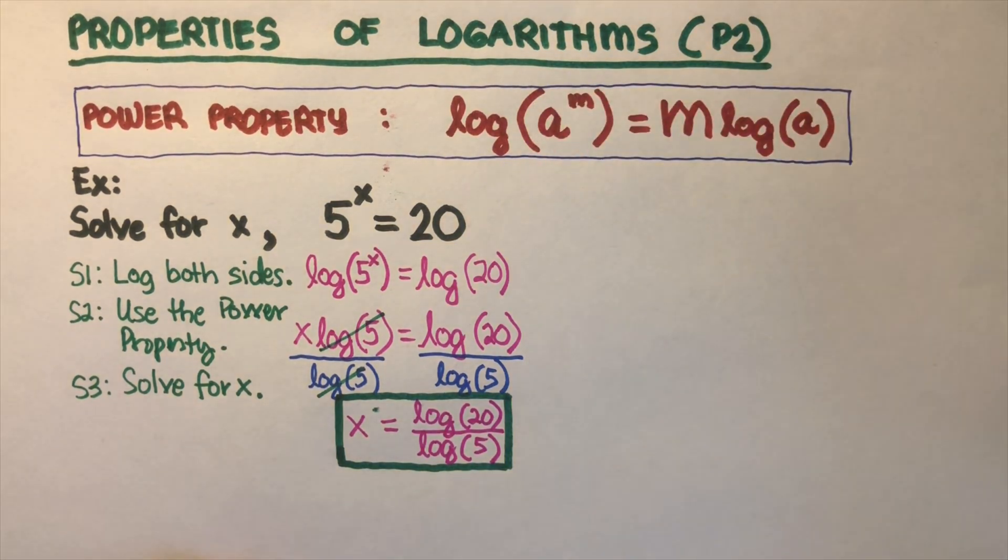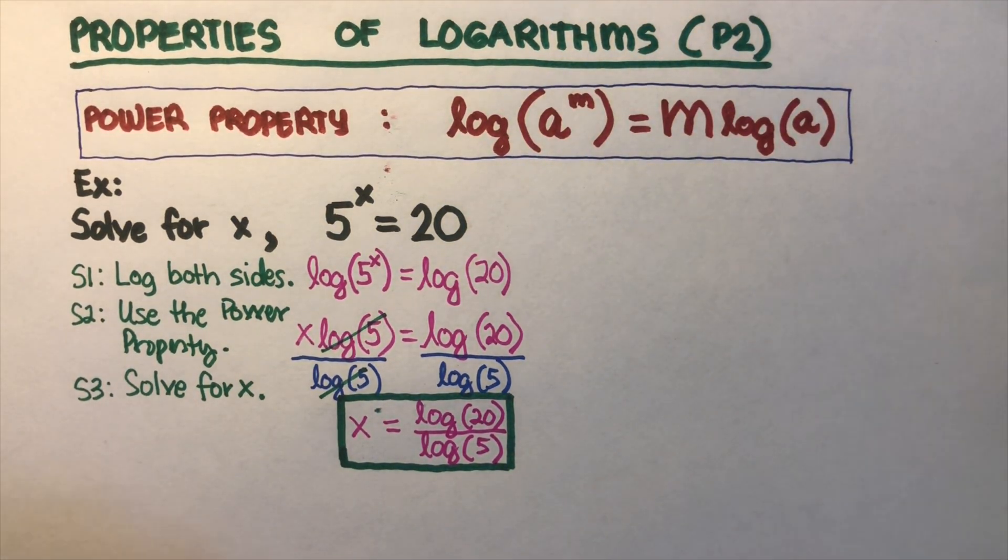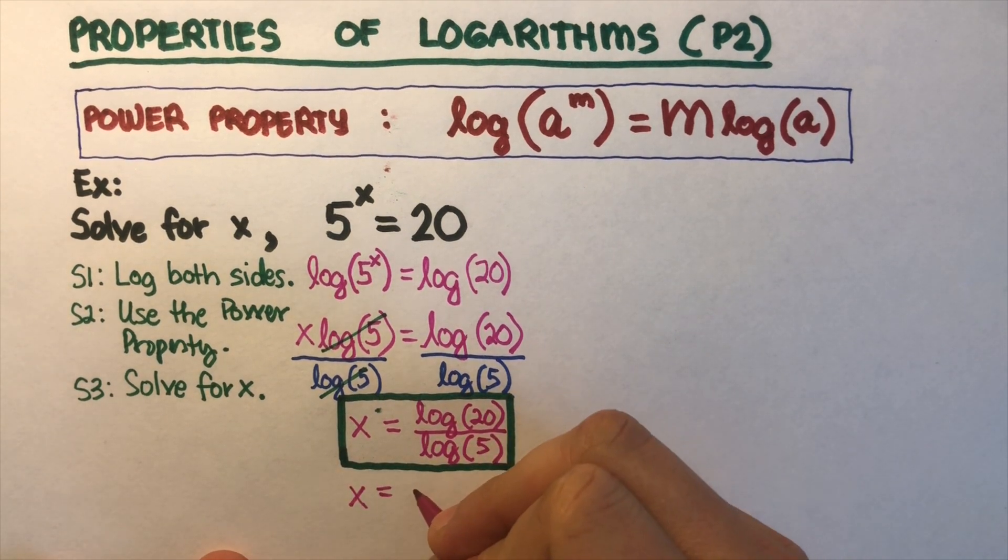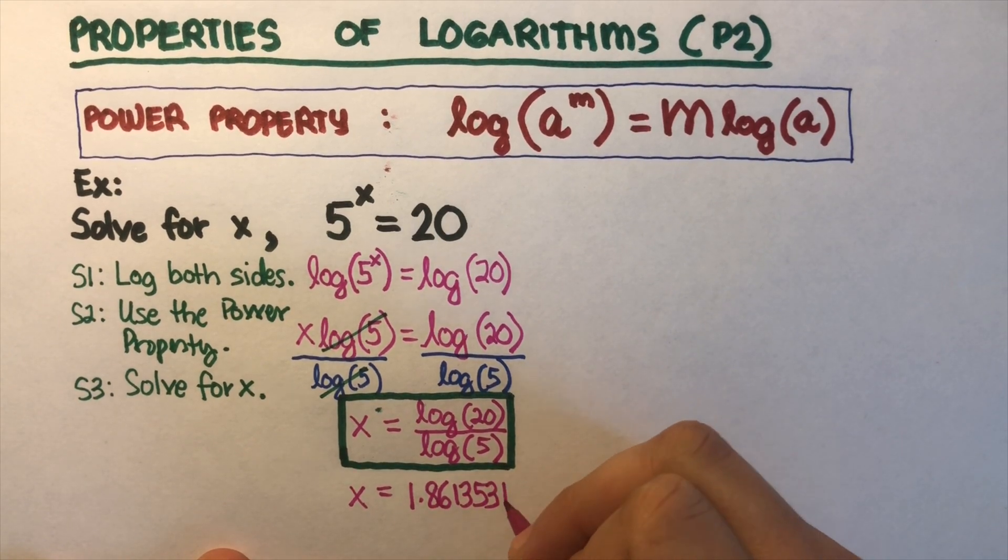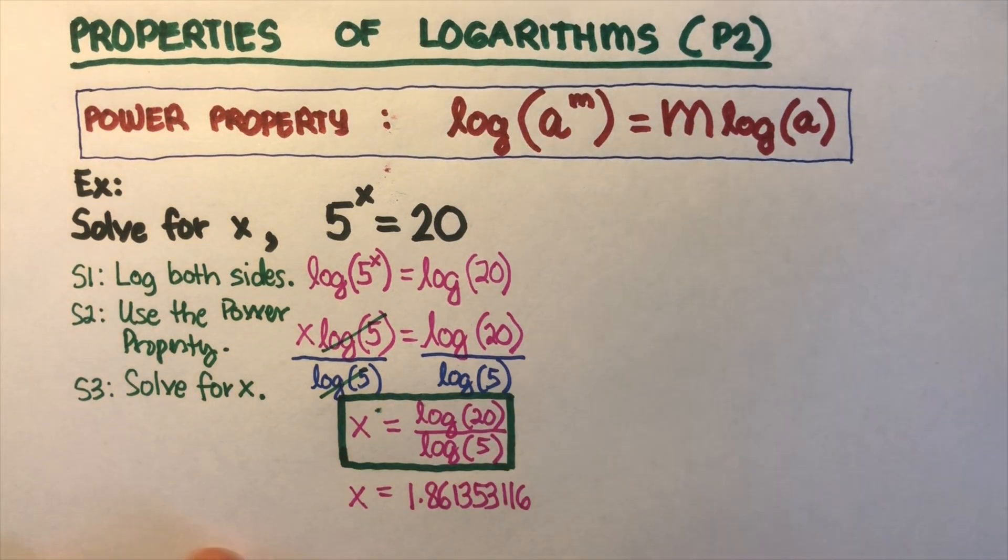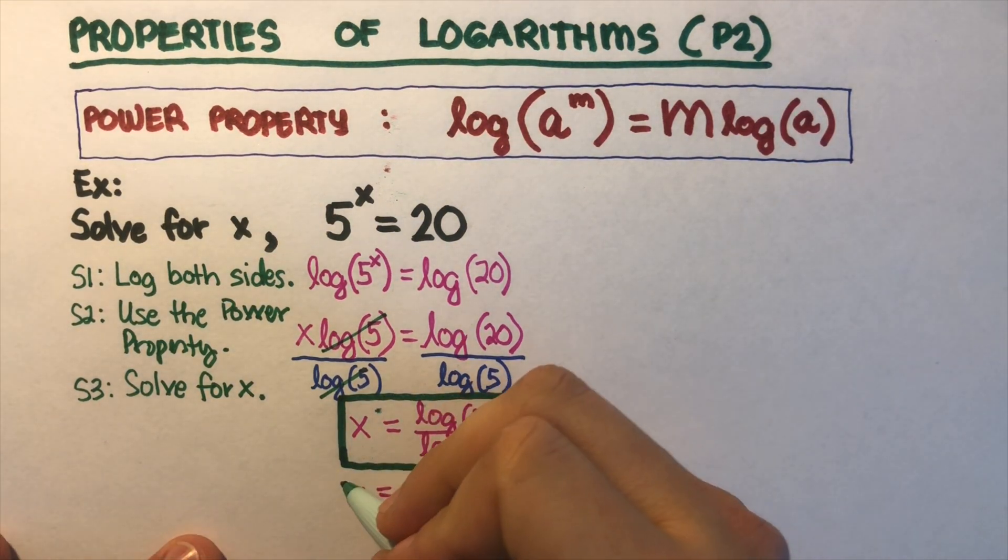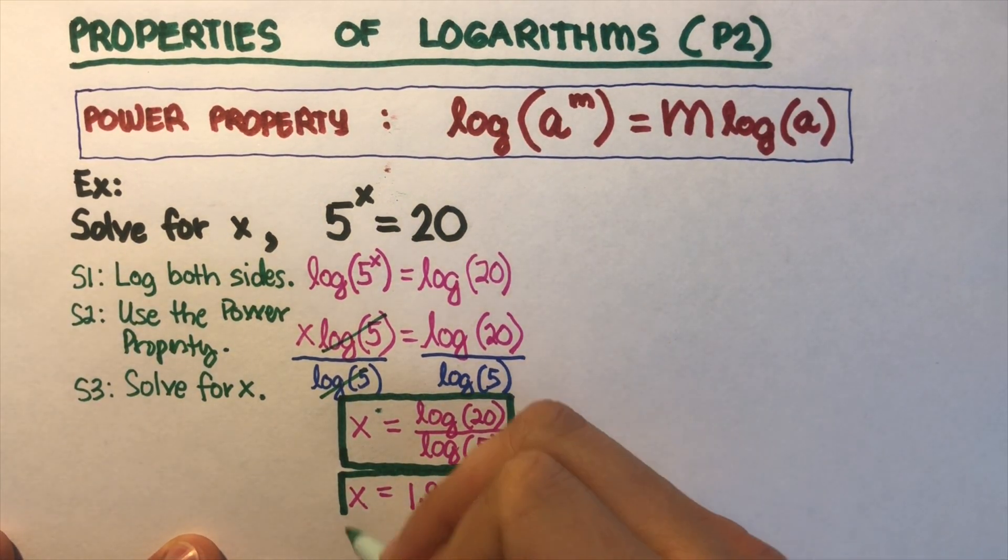So then we can go ahead and write that x is also equal to 1.861353116. So this is the decimal version of this expression right there.